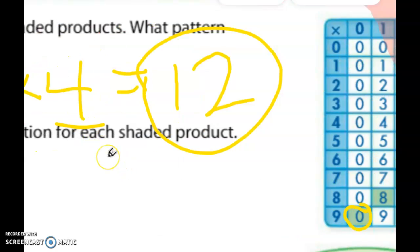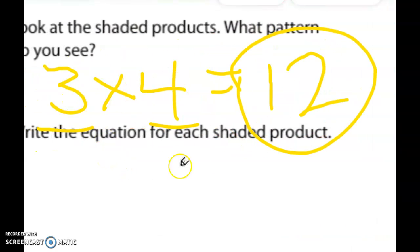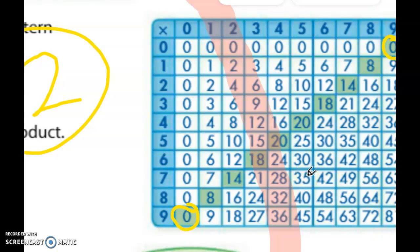If I look at the factors, the two numbers I multiply, I multiply zero and I multiply nine to get zero. Now let's look at that top one. I multiply zero and I multiply nine.